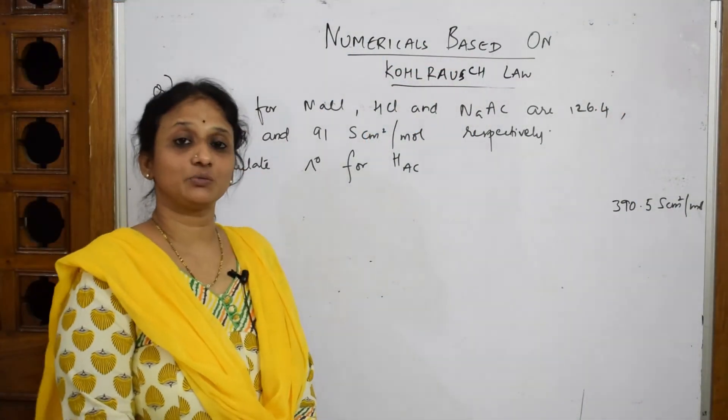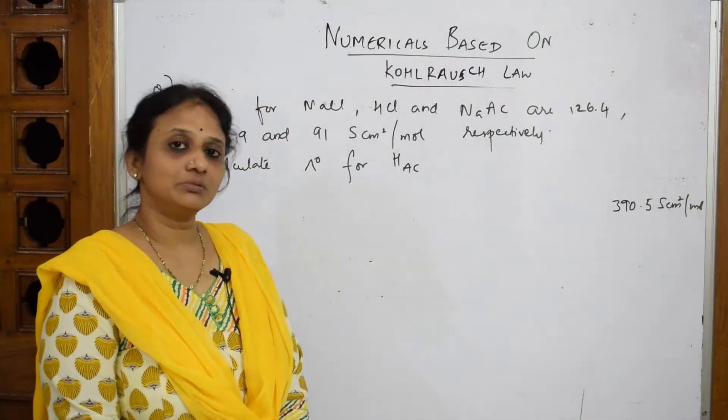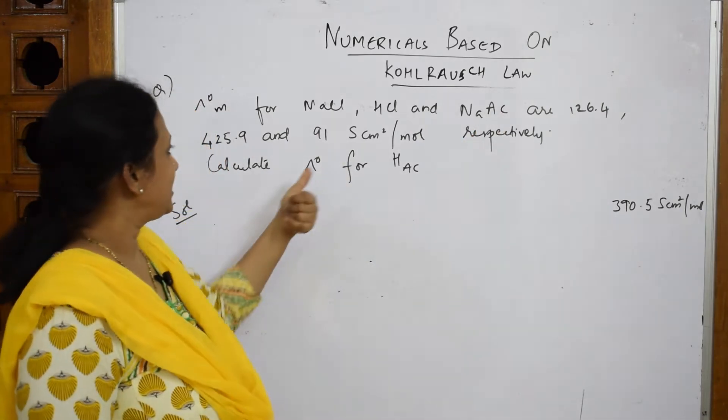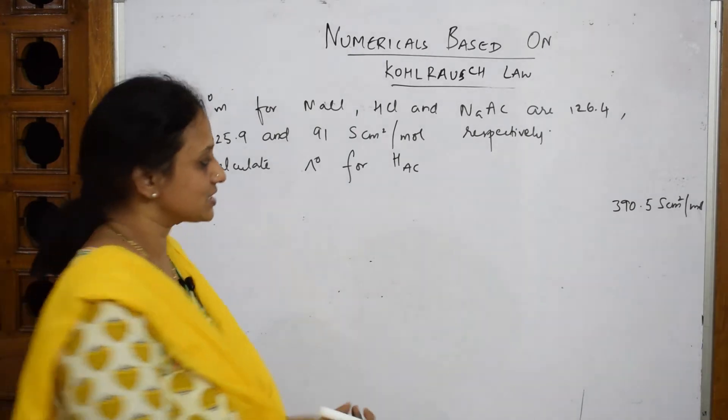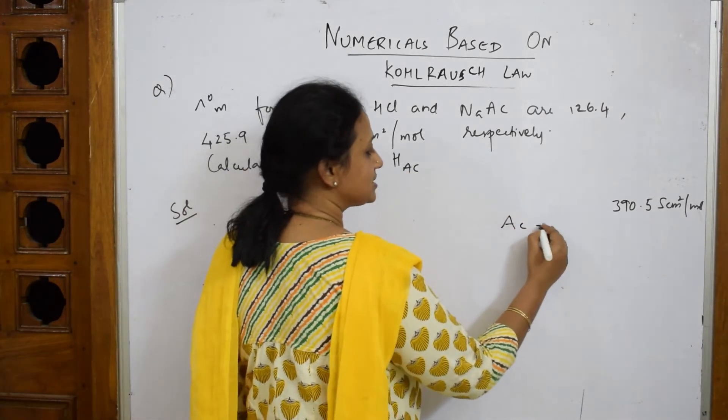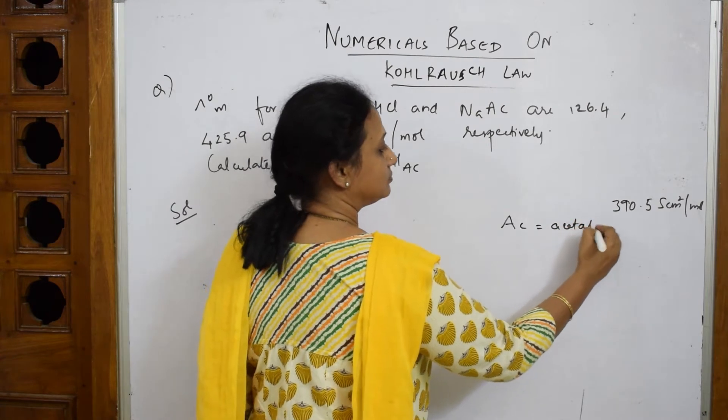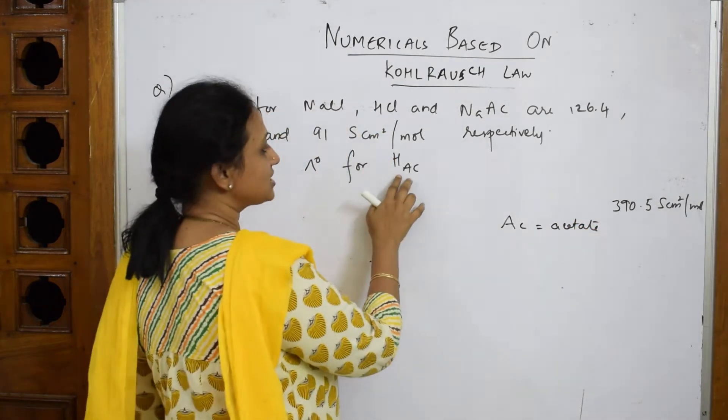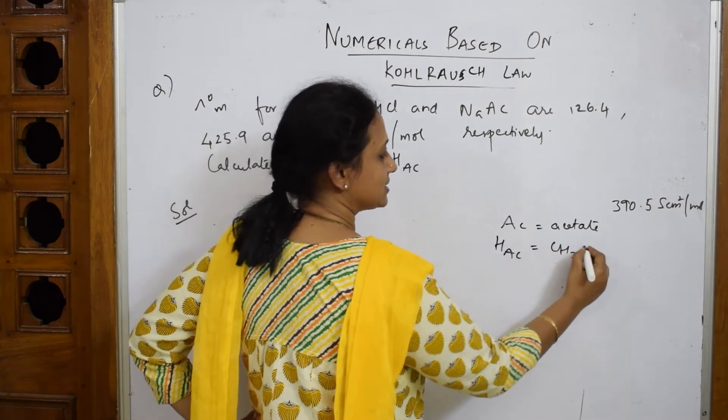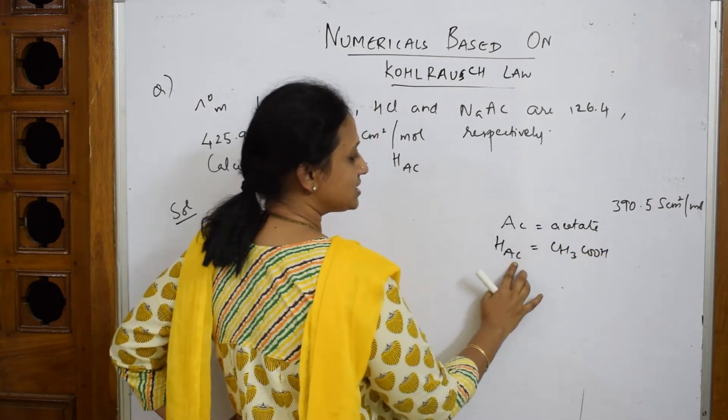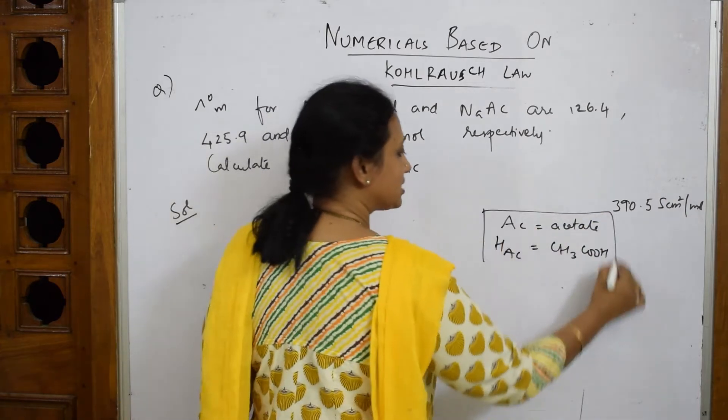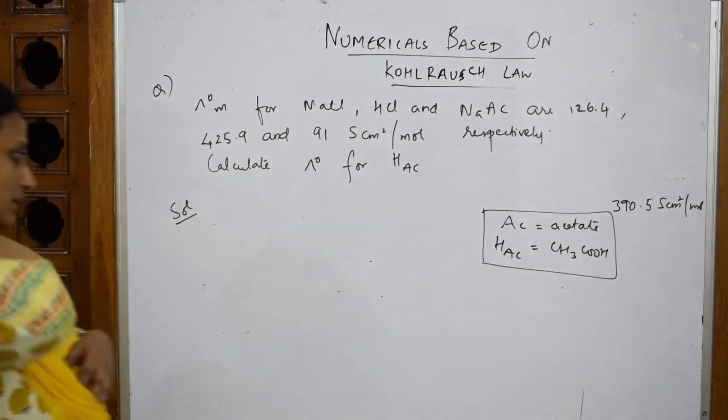Now let's see one more question. This question is quite common but students get confused with AC and HAC. Nothing to confuse - whenever you see AC in the paper, it means acetate. What is HAC? HAC is nothing but acetic acid. Acetate is C₂H₃O₂⁻ and acetic acid, if you remember this, it is easy, nothing else.